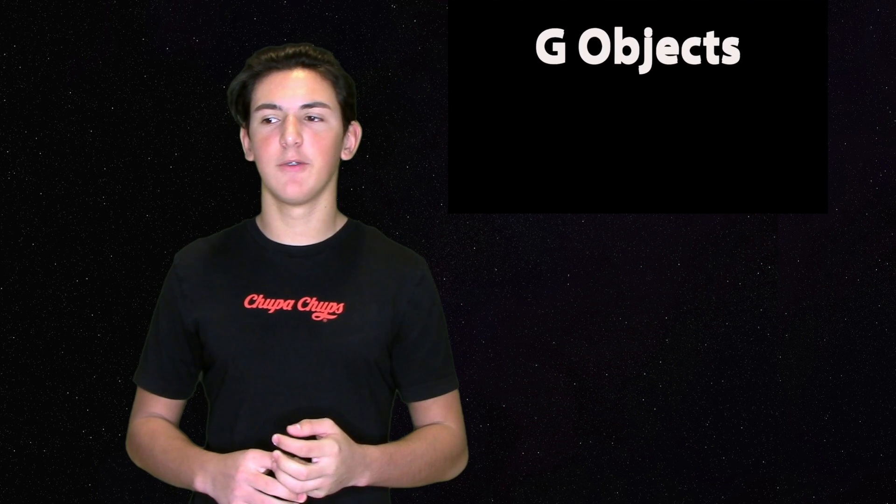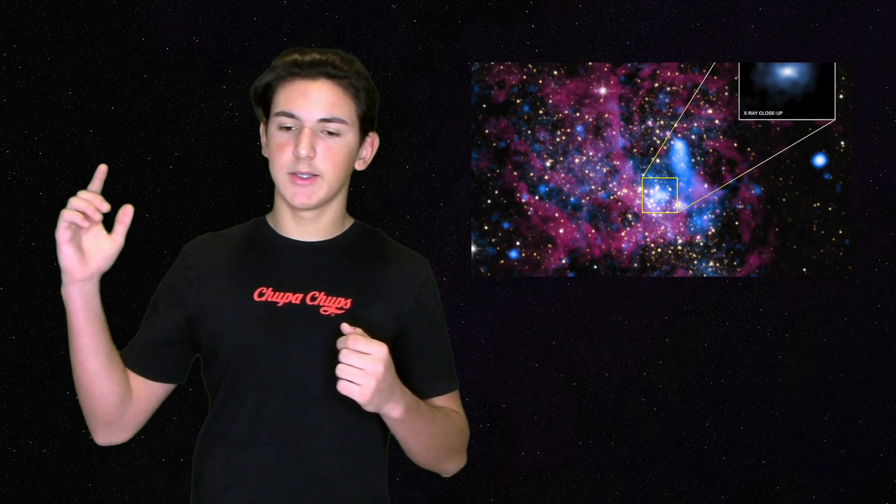This week, astronomers discovered G objects that look like gas but act like stars. They orbit around Sagittarius A, the black hole at the center of our galaxy. As they get closer to the black hole, these objects compact, but then stretch out again towards the end of their orbit. Stars normally don't do that, which is why we believe they're kind of like gas, but they act like stars because gas normally doesn't behave this way.